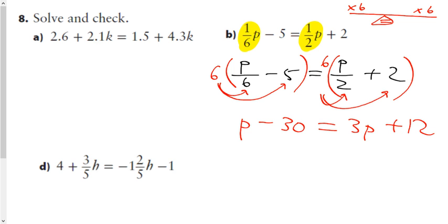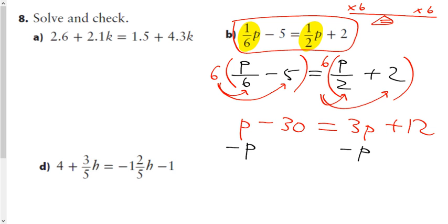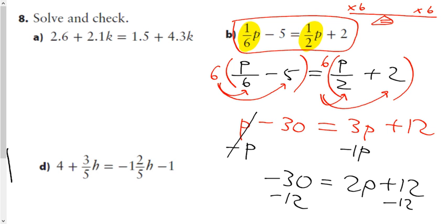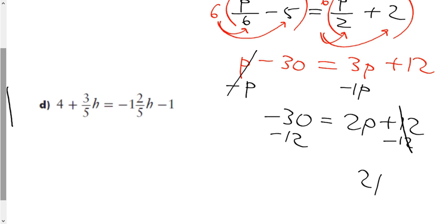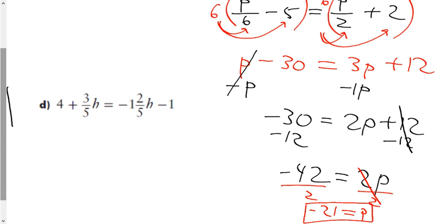After multiplying by 6: p over 6 times 6 gives p, negative 5 times 6 gives negative 30, half of p times 6 gives 3p, and 2 times 6 gives 12. Now I have p minus 30 equals 3p plus 12. Subtracting p from both sides leaves negative 30 equals 2p plus 12. Subtracting 12 from both sides gives 2p equals negative 42, and dividing by 2 gives p equals negative 21.